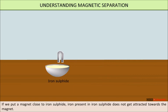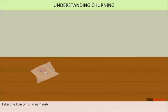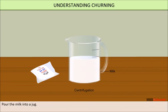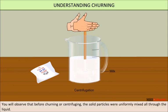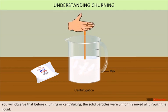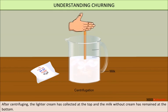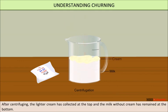Take one liter of full cream milk and pour it into a jug. Churn the milk with the help of a churner for four to five minutes and observe. Before churning or centrifuging, the solid particles were uniformly mixed throughout the liquid. After centrifuging, the lighter cream has collected at the top and the milk without cream has remained below.